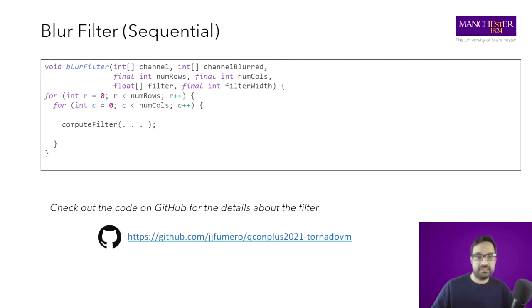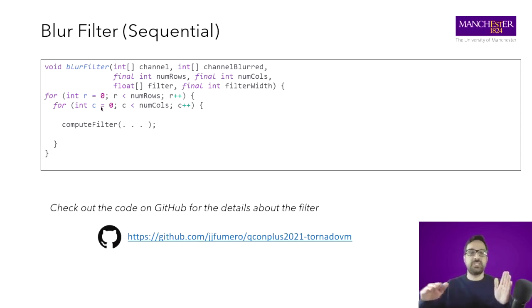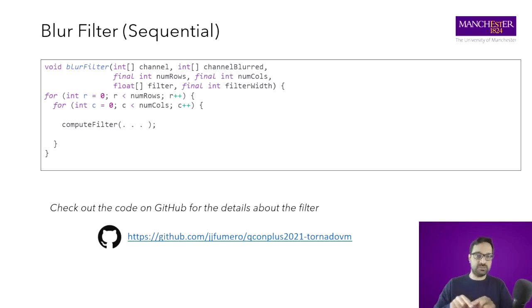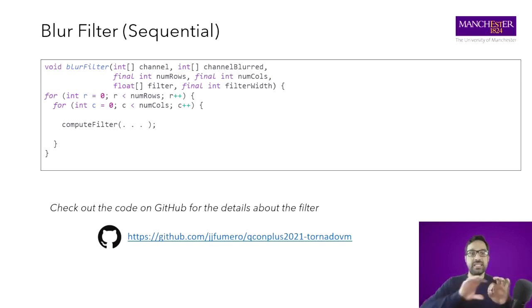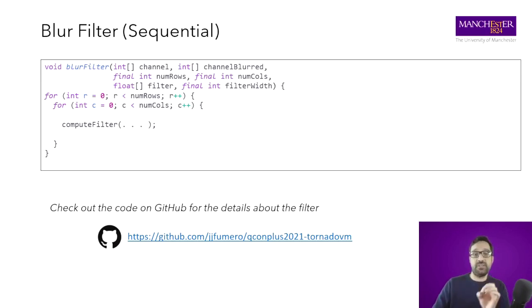So how is this implemented? The blur filter has two loops to iterate over the x-axis and y-axis of the picture, and then you apply the filter. It's essentially a map operator: for every pixel you apply a function. This is data parallelization because every pixel can be computed independently of any other pixel.